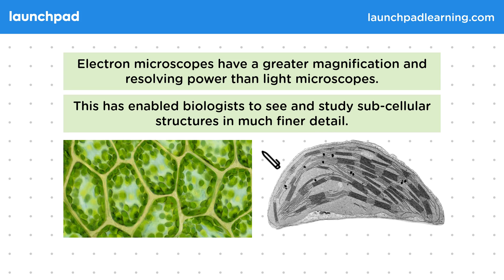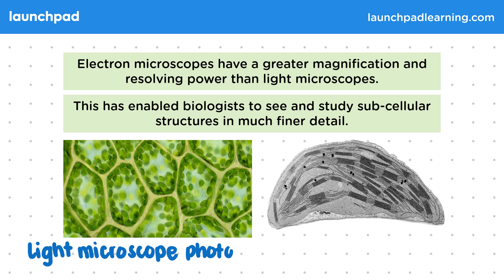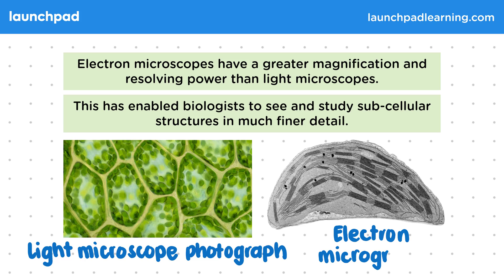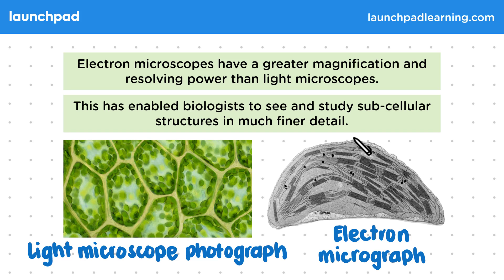This image on the left side of your screen shows a light microscope photograph of plant cells, and this image on the right is an electron micrograph. In the electron micrograph we can magnify further and see the structure of the chloroplasts, mitochondria and other organelles, even proteins in high resolution. Ribosomes are too small to see with a light microscope, but we can see them with an electron microscope. The electron micrograph is black and white, but colour can be added using computer software.